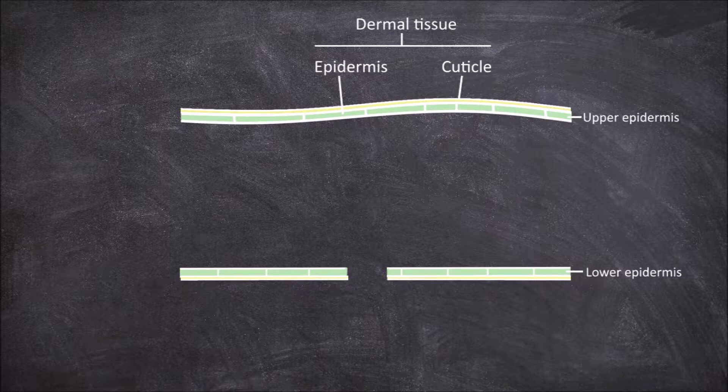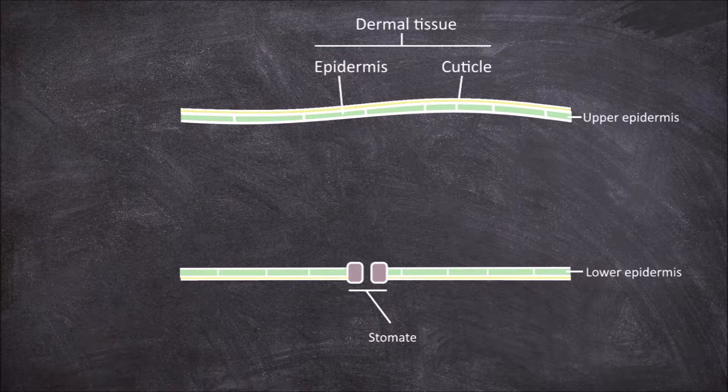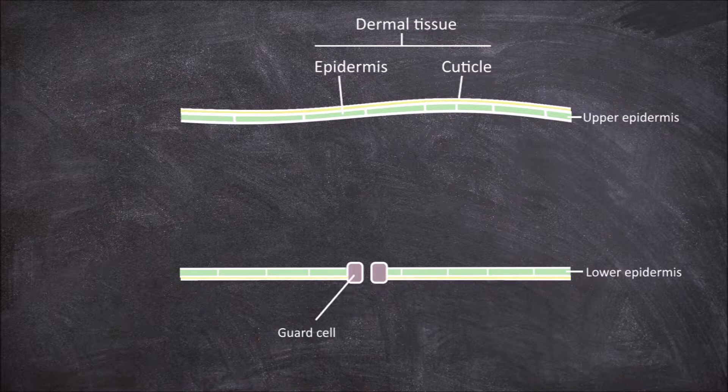The epidermis is spotted with stomata. They are found in large numbers on the lower surfaces of the leaf; they are also found in smaller numbers on the upper surface. A single stomate consists of two guard cells and a pore opening called the stoma. The stomata control the flow of carbon dioxide into and oxygen and water out of the leaf.